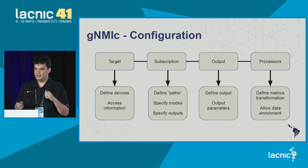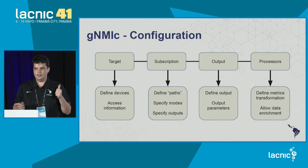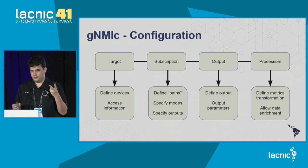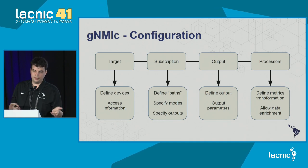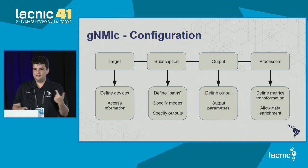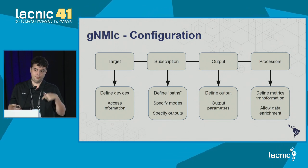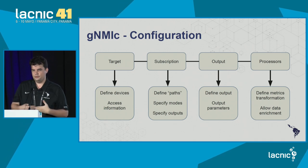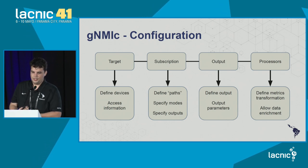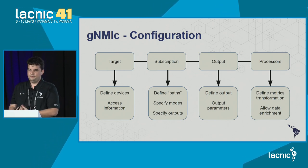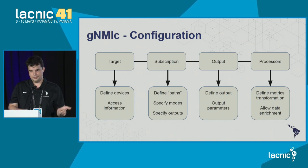We also specify the modes we want to get this information. With gRPC, we can set information, get information, and subscribe to information. The most interesting method is subscribe, which allows the device to push information to us — we don't need to poll the device. So we use GNMI to specify the paths, the type of information we want, and how we want to receive it.